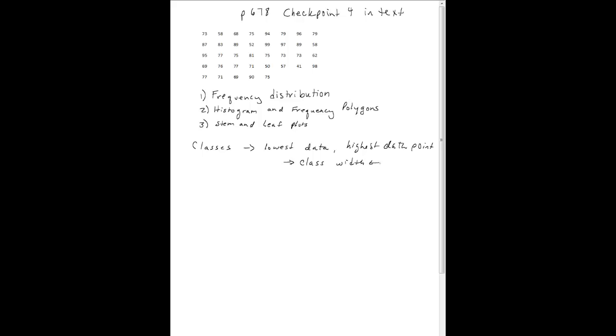When I look at this data, I see my lowest value is 41 and my highest value is 99, so I need to have my classes go from at least 41 up to 99. I think I'll go from 40 to 49, 50 to 59, and so on all the way up to 90 and 99.